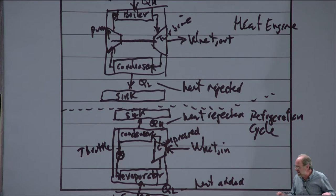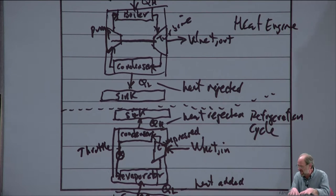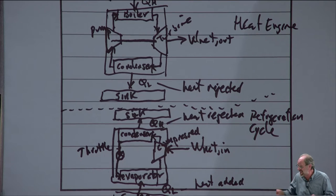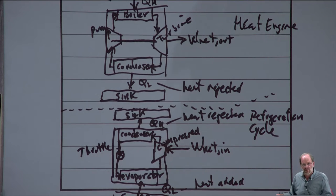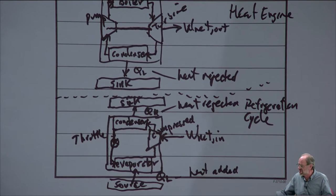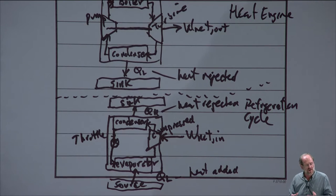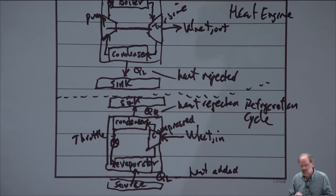Unlike the textbook, which covers heat engines entirely before refrigeration cycles, I'm going to discuss them simultaneously because they're pretty much the same thing — they just work in opposite directions of one another. We've got a source and a sink, the various mechanical components, heat transfer, and work done. Now we want to figure out how to determine the performance of these two different devices and whether that performance satisfies or violates the second law of thermodynamics.